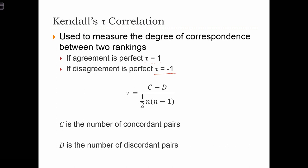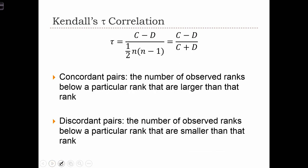We calculate Tau based on a ratio of something called C, which is the number of concordant pairs in the data set, and D, the number of discordant pairs in the data set. Concordant pairs are the number of observed ranks below a particular rank that are larger than that rank. And discordant pairs are the number of observed ranks below a particular rank that are smaller than that rank. So C is the number of these concordant pairs, and D is the number of the discordant pairs.